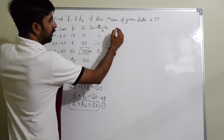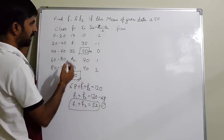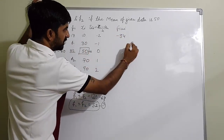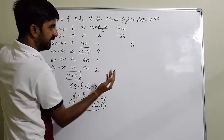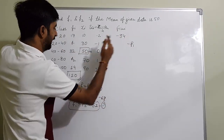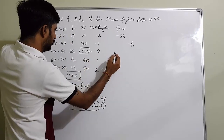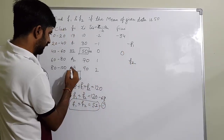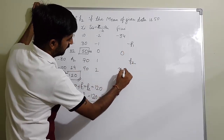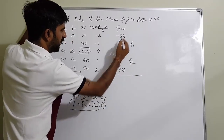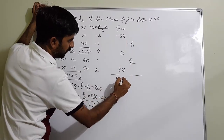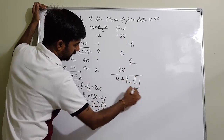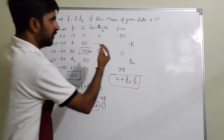Now we multiply fi by ui. We get minus 34 here, then f1 into minus 1 gives minus f1, then 32 into 0 gives 0, then f2 into 1 gives plus f2, then 19 into 2 gives 38. Adding these up: minus 34 plus 38 is positive 4, so the total sum of fi·ui is 4 plus f2 minus f1.